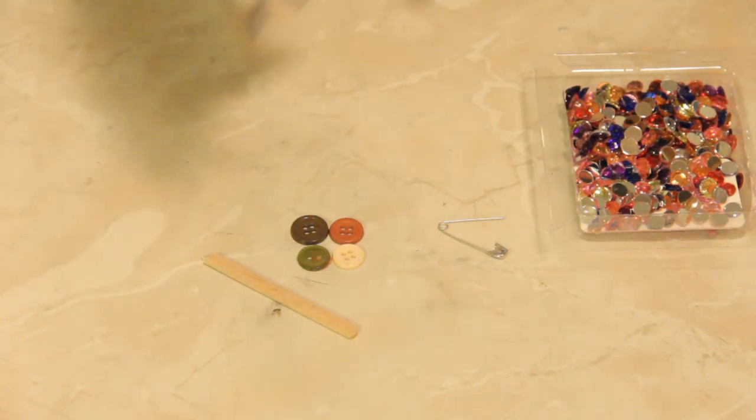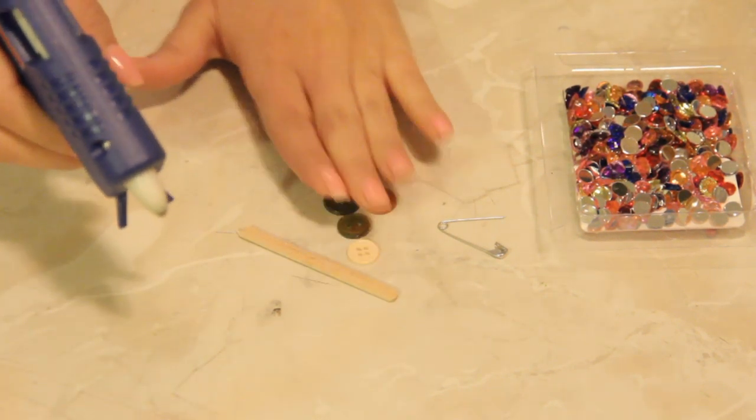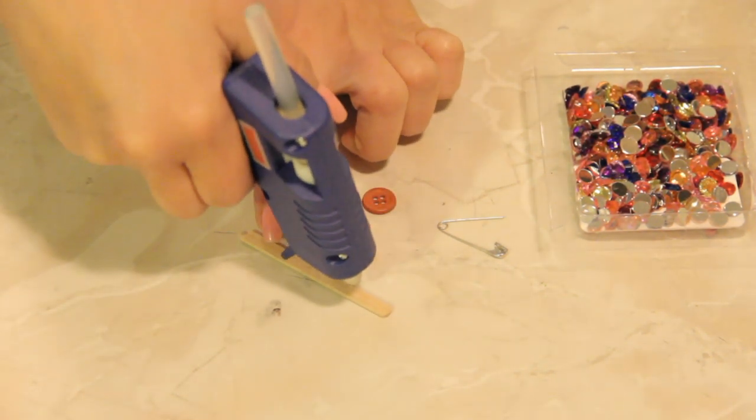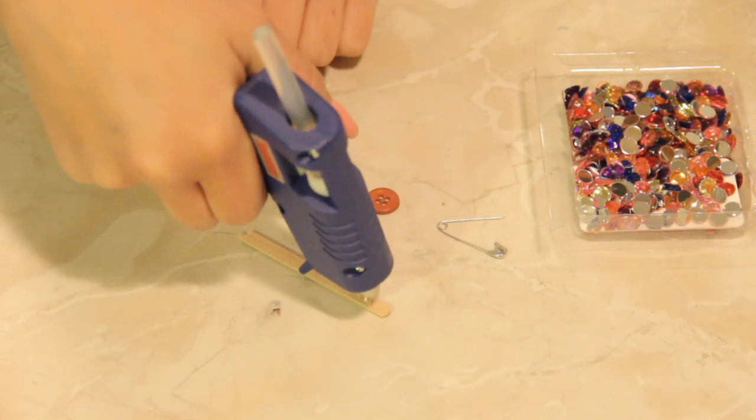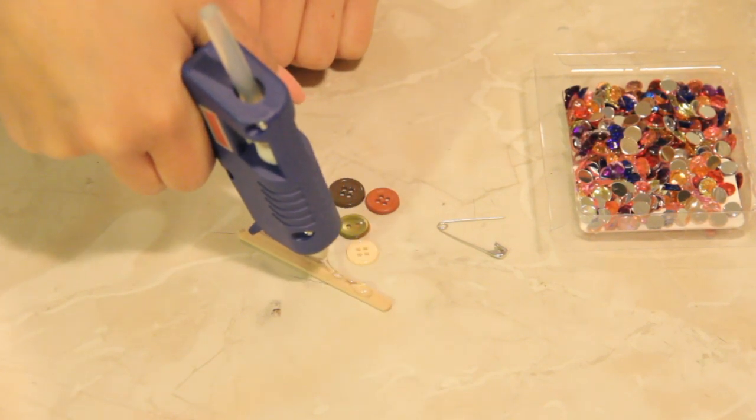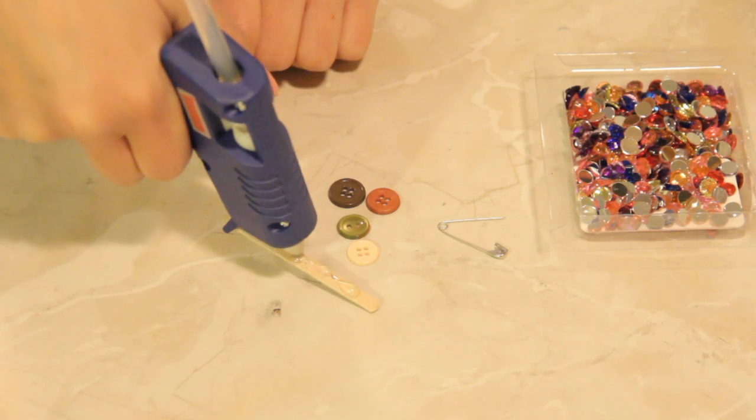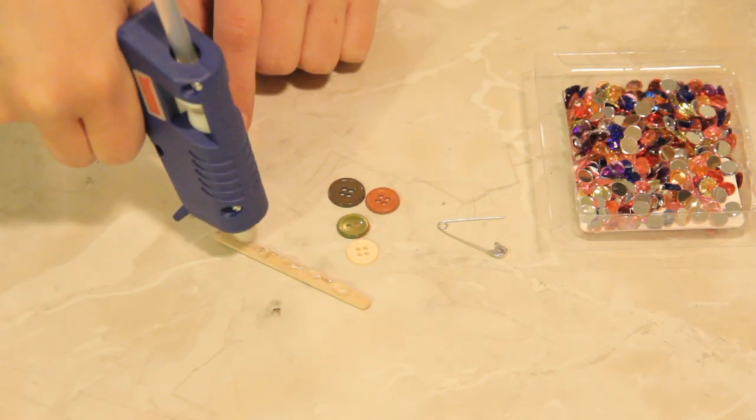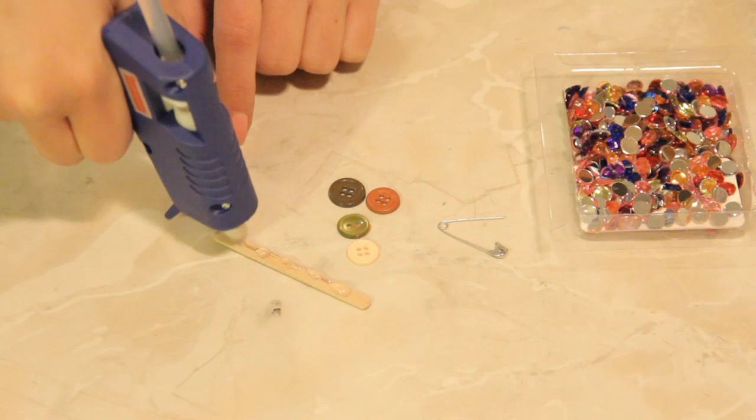So what I'm going to do is take my hot glue gun. Now if you're a child doing this I highly recommend grabbing an adult to do this part of the project because hot glue guns are hot and you can burn yourself. So if you're an adult just be careful.